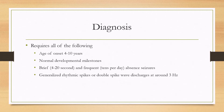Diagnosing childhood absence epilepsy requires all four of the following criteria: an age of onset between 4 and 10 years old; the patient must be developmentally normal; the seizures must be brief — between 4 and 20 seconds — and fairly frequent, meaning tens per day; and the seizures on EEG must show around 3 Hz generalized rhythmic spikes or double spike-wave discharges.